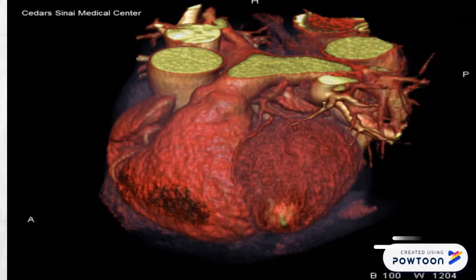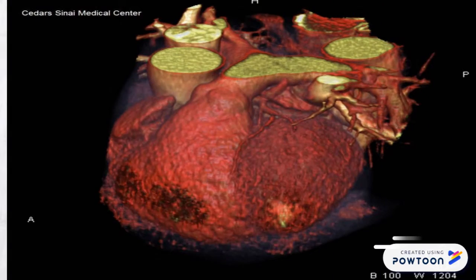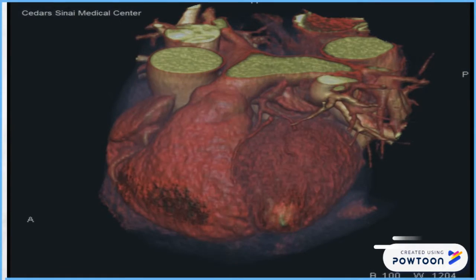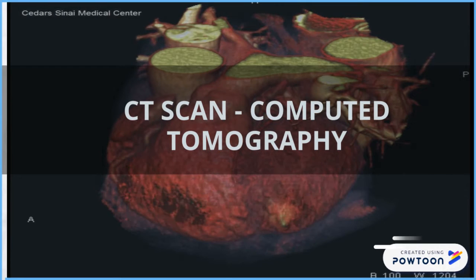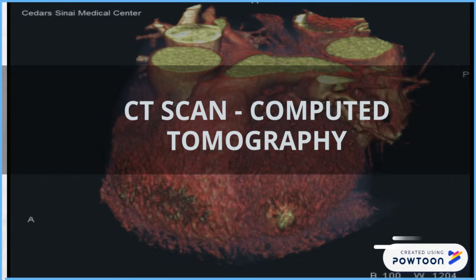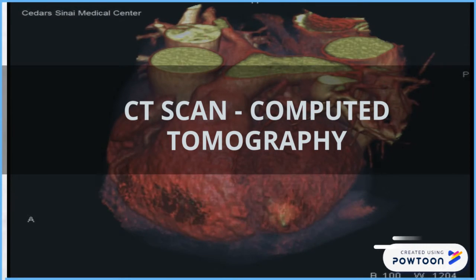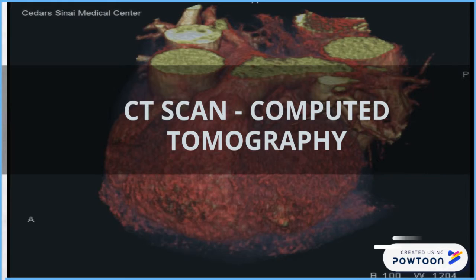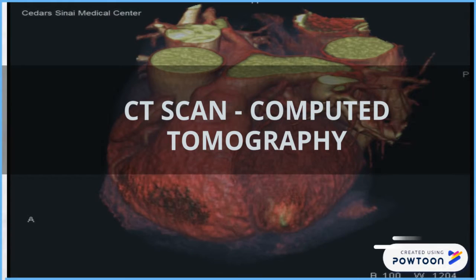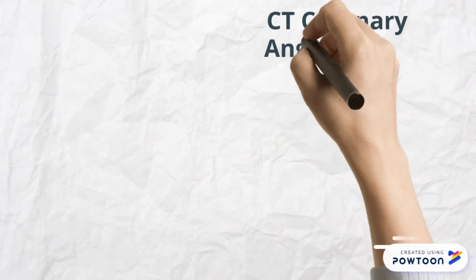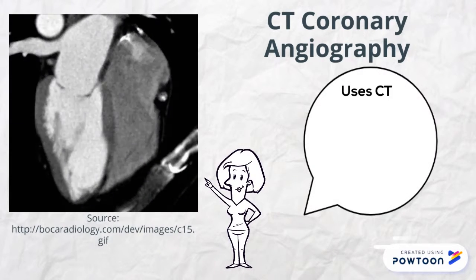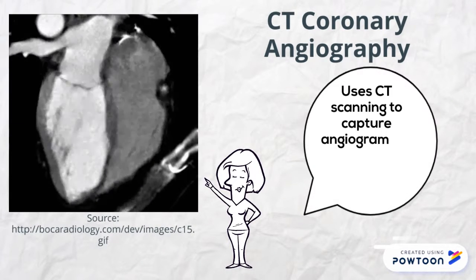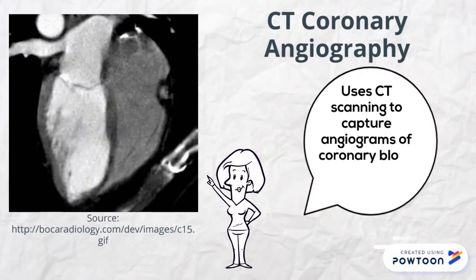We will now be talking about CT scans, also called computed tomography. This can be used for imaging the heart through CT coronary angiography. CTCA uses CT scanning technology to capture angiograms of the coronary blood vessels of the beating heart.